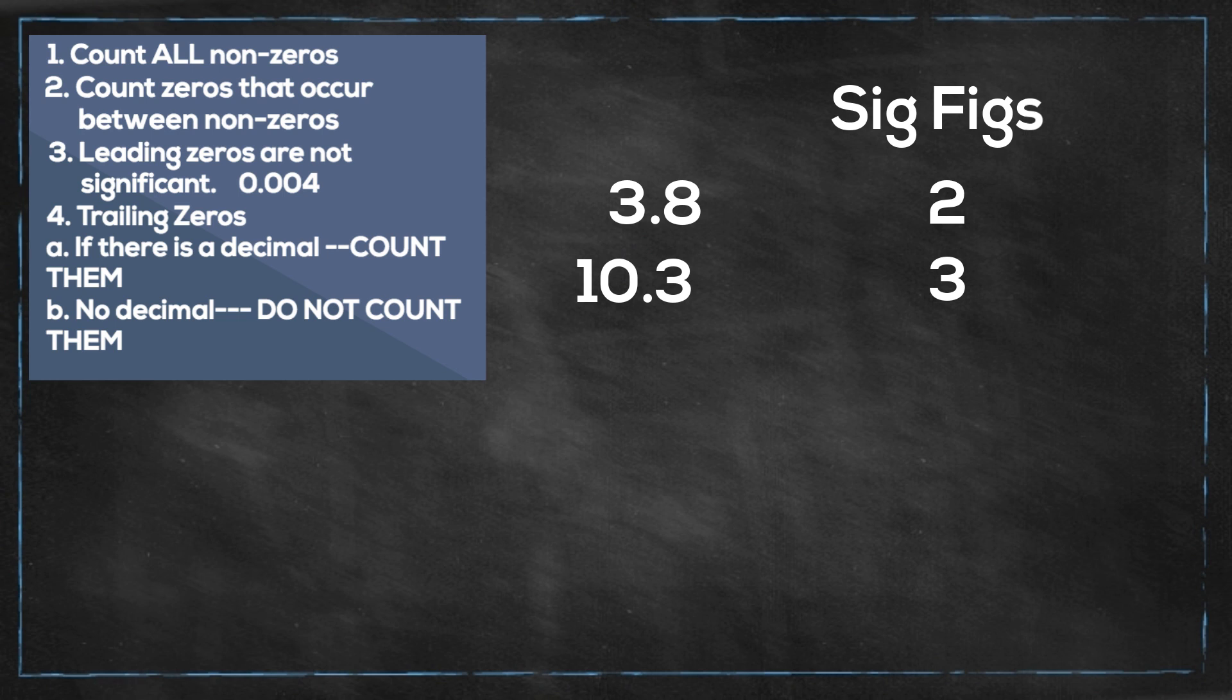This next one, 0.0630, you have two rules that apply. First, you would not count the leading zero, and you do count the trailing zero, so you have three. The reason why you count the trailing zero is that you have a decimal.